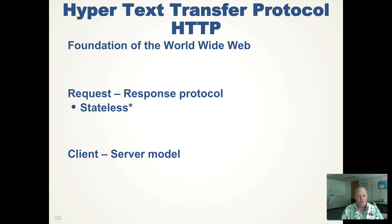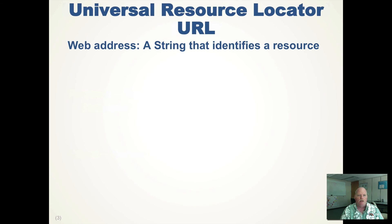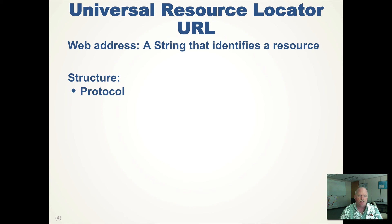So what are the things that we are requesting? We have a Universal Resource Locator, or a URL. It's basically a web address that indicates a resource — just a string that identifies a particular resource out on the World Wide Web. The first part of the URL is the protocol, or the way you are communicating across the World Wide Web to the server.